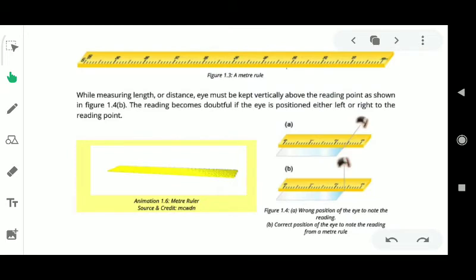When measuring length or distance, the idea is that you have to keep your eye in the vertical position. For example, if this is an object and you want to see the distance between two points, you will set your eye vertically. If your eye is positioned either left or right, then you will not be able to read it correctly. This is why it is necessary to set your eye vertically.